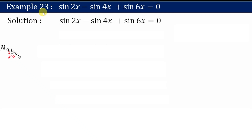Hello students. In this video we will discuss Example 23 of the trigonometry chapter: sin 2x − sin 4x + sin 6x = 0. This equation can be split using the sin x − sin y formula or the sin x + sin y formula.